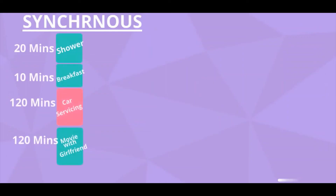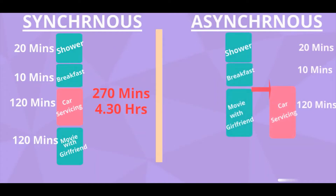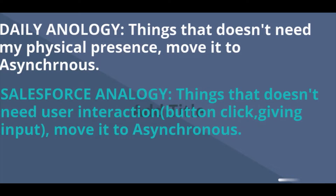So while I watch the movie, my car servicing will also be done in parallel. We can move certain tasks to the background so they work in parallel while we continue with our current tasks. Asynchronous is something which runs in the background without having you wait for the task to finish — in this case, our car servicing. If I waited for car servicing, the total time would be 270 minutes — 4 and a half hours. But by taking the asynchronous approach I save almost 2 hours. In the daily analogy, things that don't need my physical presence move to asynchronous. In Salesforce, things that don't need user interaction — like button clicks or giving inputs — those kinds of code you can move to asynchronous. Thus you can save time.